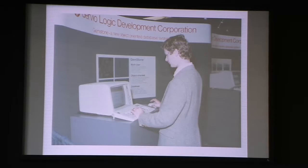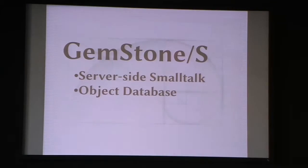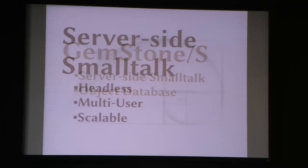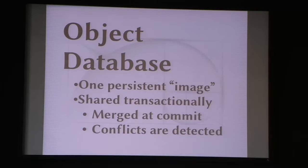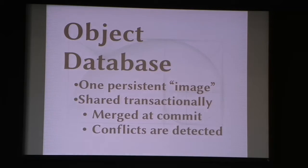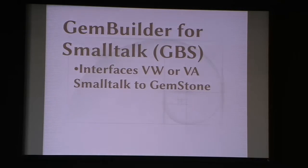So here's the actual introduction which most of you all get. GemStone is server-side Smalltalk and an object database all combined together. Server-side Smalltalk means it's headless, it's multi-user, and it's scalable. You've heard about terabytes and billions of objects on the database — one big persistent image on disk shared between up to thousands of VMs. They share it transactionally so that when you commit your changes, they merge together with other people's changes, much like a merge in a source code management system. It detects conflicts, and you might have to deal with them. Dealing with conflicts could be an entire talk itself, so we're not going to cover that.